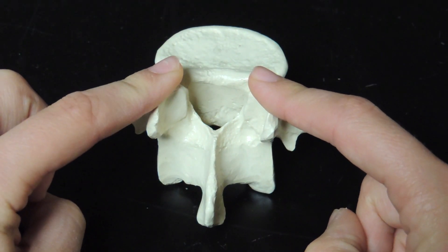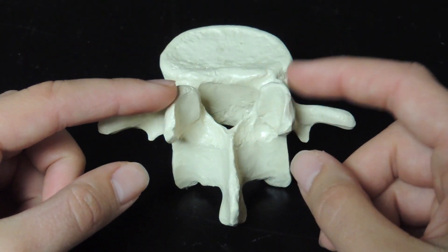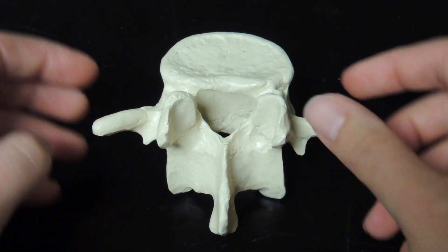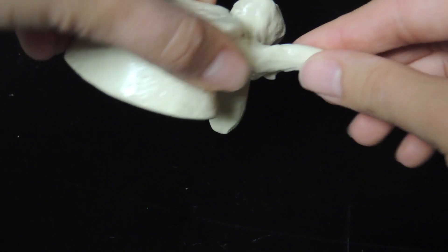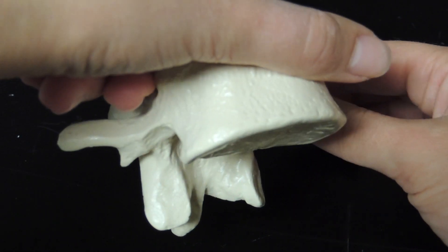Now, the superior articulating facets are pointed more inwards, like I'm clapping hands like this. And the inferior articulating facets are pointed down and back, or a little bit down and out.